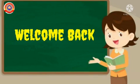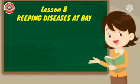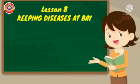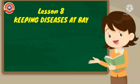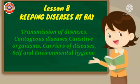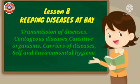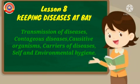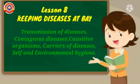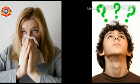Hi, my dear students, welcome back to our basic science class. Today let's discuss our new chapter, Lesson 8: Keeping Diseases at Bay. Health is a state without disease. This chapter gives us an awareness about the situation of transmission of diseases, contagious diseases, causative organisms, and carriers of diseases. It also explains about self and environmental hygiene and vaccines.